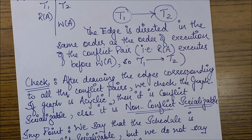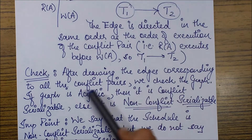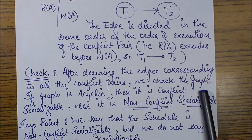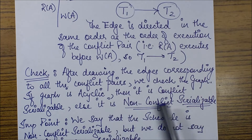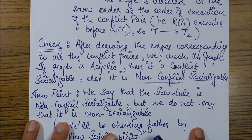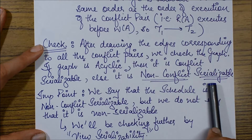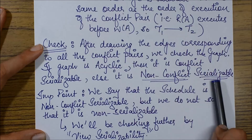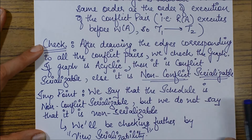How do we check with the help of this precedence graph method? After drawing the edges corresponding to all the conflict pairs, we check the graph. If the graph is acyclic — that is, no cycle is formed — then it is conflict serializable; else it is non-conflict serializable. Importantly, non-conflict serializable does not mean non-serializable, because we would still check for view serializability, which we will deal with later.